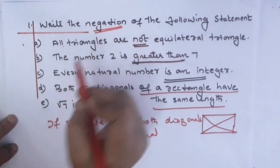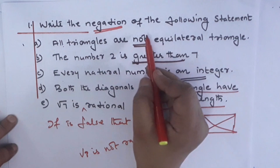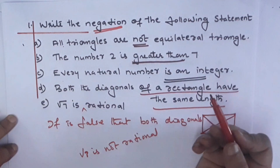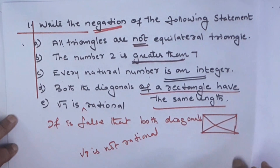So negation works in this way — in a sentence it gives the opposite meaning. It is false. That is negation.